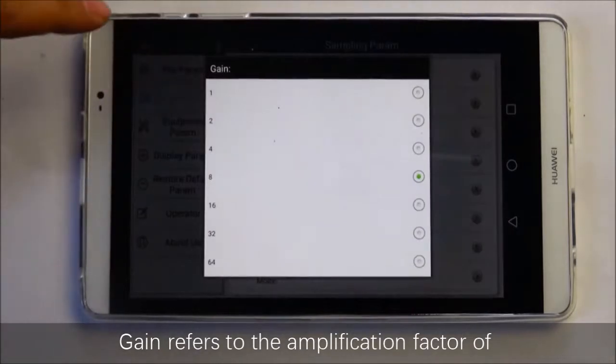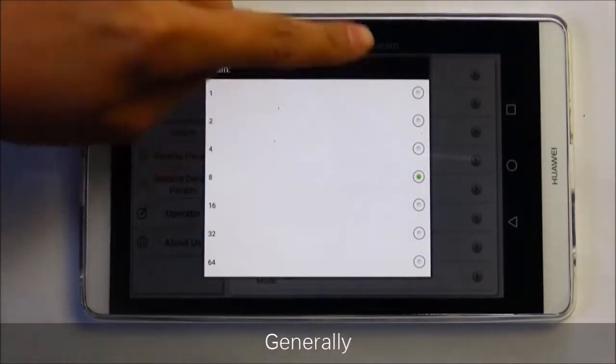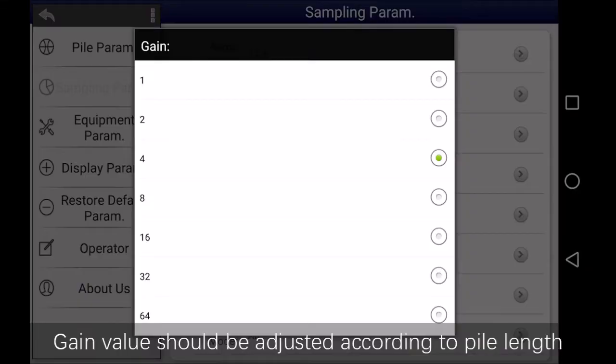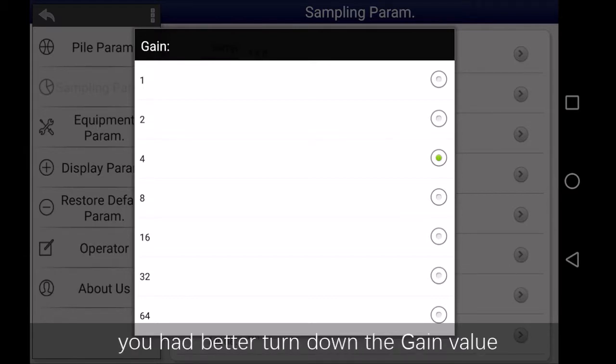Gain refers to the amplification factor of the signal received by the sensor. Generally, the gain value should be adjusted according to pile length, condition of the pile head surface, and striking equipment. When the signal is weak, you can turn up the gain value. When the signal is strong, you'd better turn down the gain value.